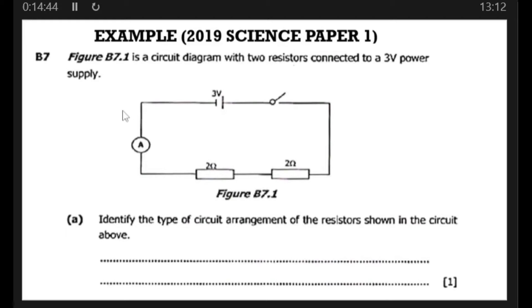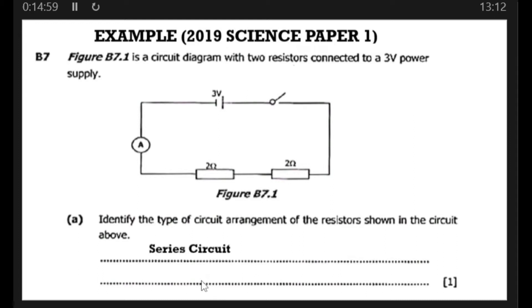For question (a): identify the type of circuit arrangement. Looking at the resistors, since they are connected end to end, we can conclude that this arrangement is a series circuit.